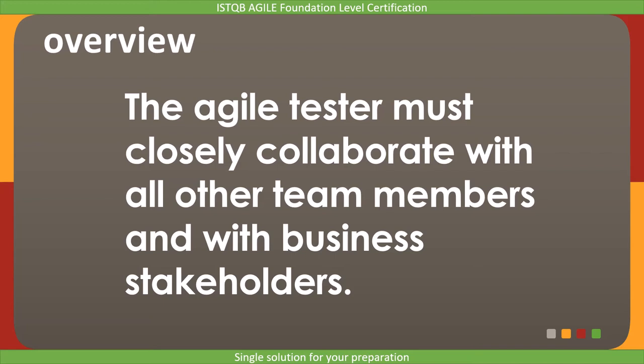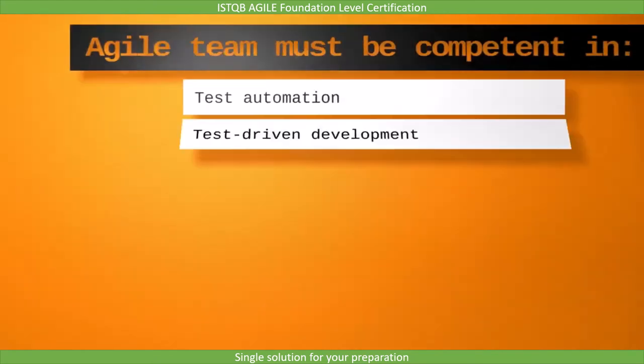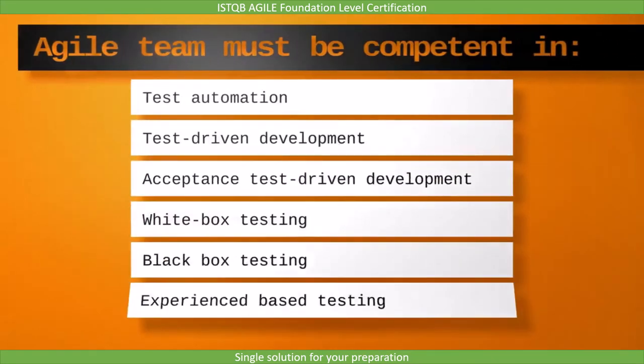The Agile Tester must closely collaborate with all other team members and with business stakeholders. The Agile Tester must be competent in Test Automation, Test Driven Development, Acceptance Test Driven Development, White Box Testing, Black Box Testing, and Experience Based Testing. Each of these test types will be covered in detail with an example in the upcoming chapter, so for the time being, just remember these test types.